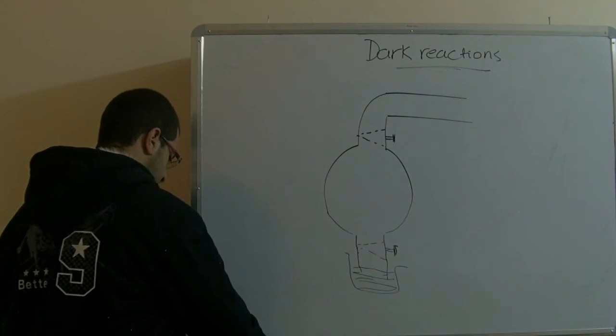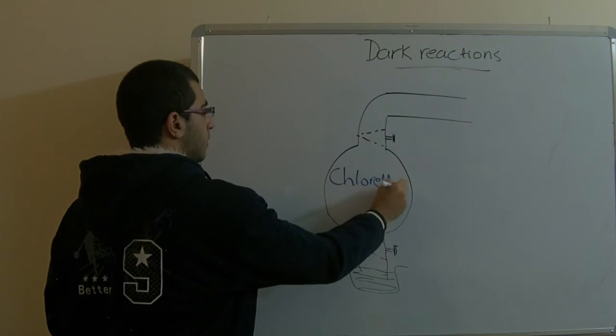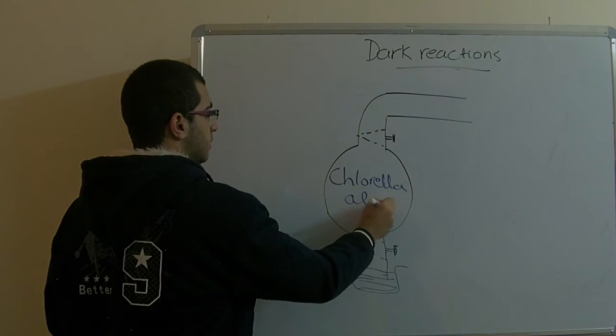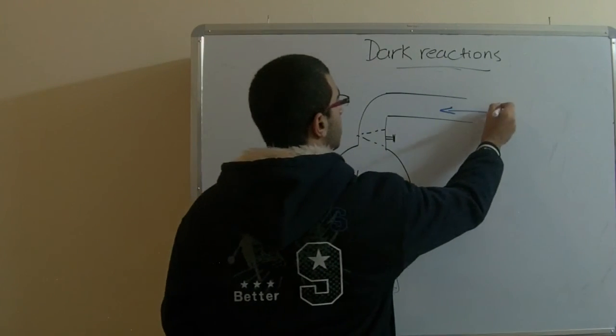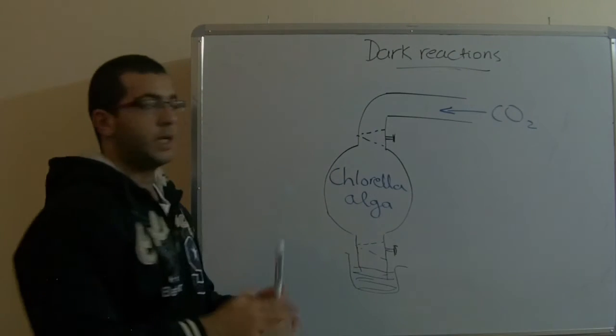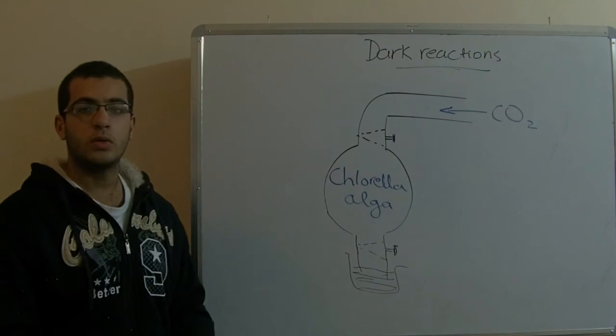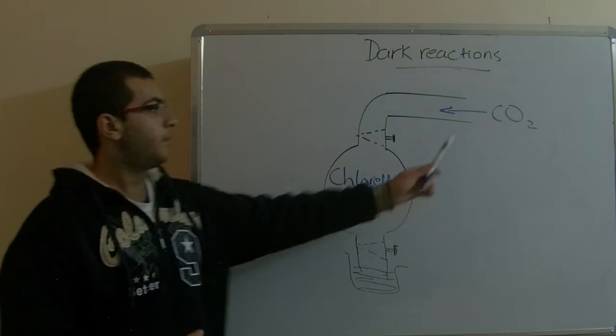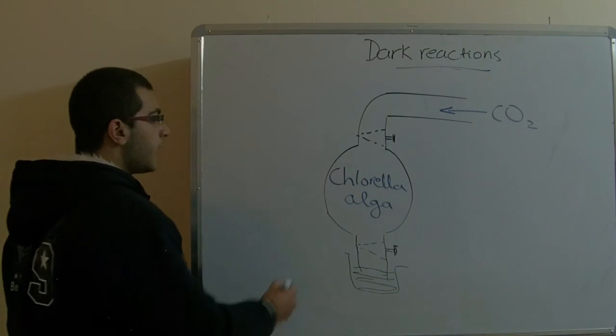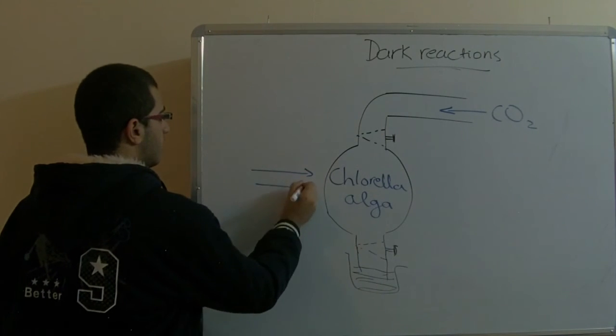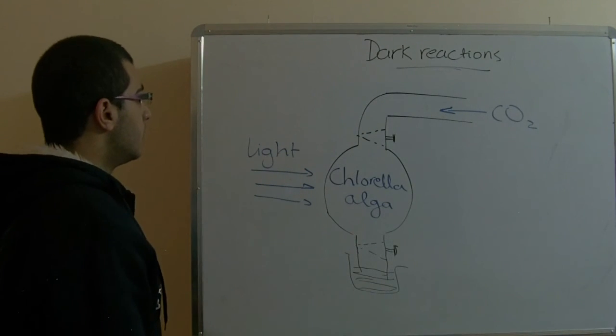So here we have Chlorella alga, green alga, and here we have carbon dioxide. And of course, carbon dioxide is important in the dark reactions because we said that the hydrogen carried by the NADPH2 helps in fixing the carbon dioxide into carbohydrates. So it's important in the dark reactions. And here we have a source of light.